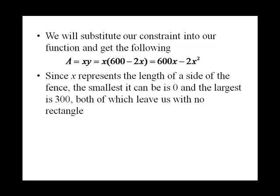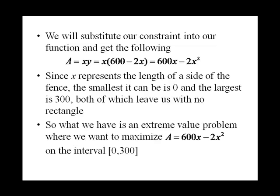Now, since x represents the length of a side of fence, the smallest it can be is 0 and the largest it can be is 300. Because if x is 0, we have no area. And if x is 300, we actually have no area as well. So what we have is an extreme value problem because we want to maximize a continuous function on the interval from 0 to 300.